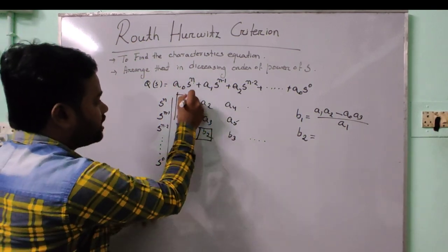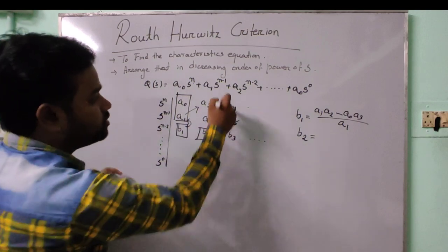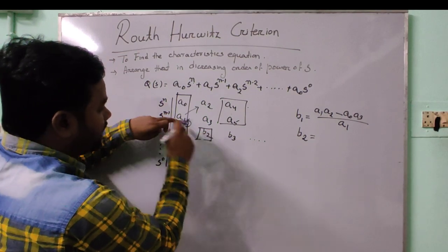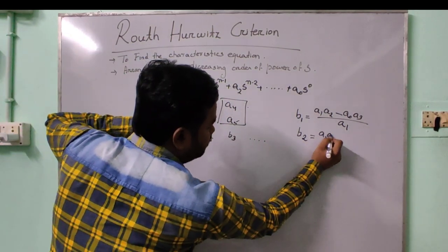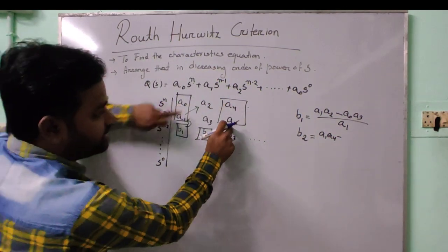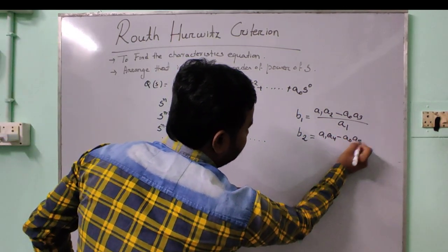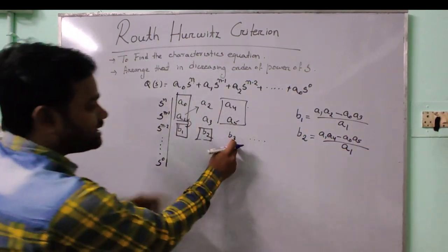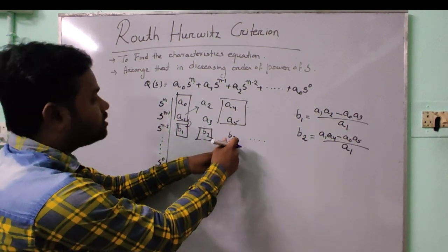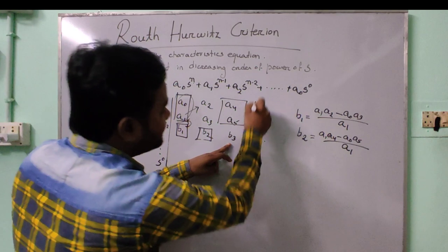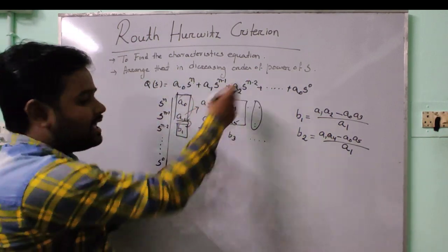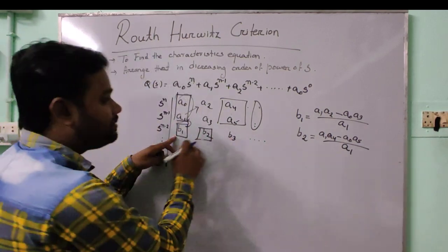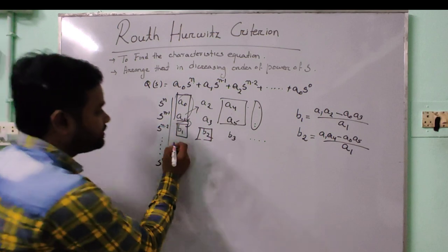Continuing with the third row, b₂ is equal to (a₁ times a₄ minus a₀ times a₅) divided by a₁. For b₃, we cross-multiply the first column with respect to the next relevant column and divide by a₁. All elements of the third row are filled using this cross-multiplication formula, dividing always by the leading element of the second row.